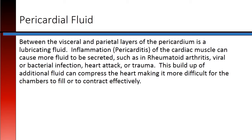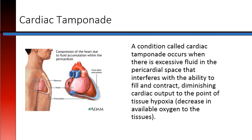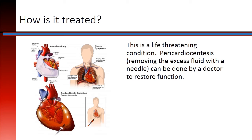This buildup of additional fluid can compress the heart, making it more difficult for the chambers to fill or contract effectively. A condition called cardiac tamponade occurs when there is excessive fluid in the pericardial space that interferes with the ability to fill and contract, which diminishes cardiac output to the point of tissue hypoxia — otherwise known as a decrease in available oxygen to the tissues. This means the heart is not able to pump effectively and the tissues of the body are going to suffer. This is a life-threatening condition.